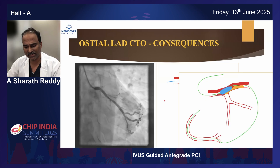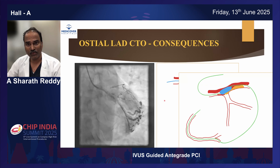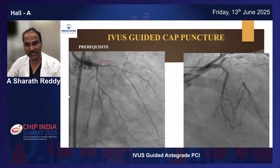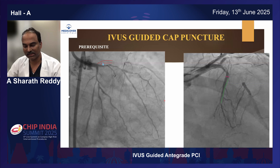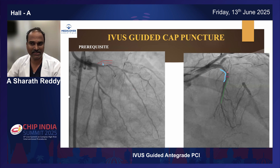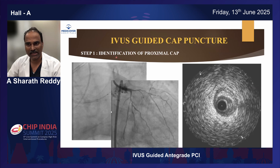The dangers with this are: if you go antegrade without knowing how you are going, you can occlude your side branch with a dissection flap. If you go retrograde also, you can do the same thing. The best strategy is to do an IUS-guided cap puncture followed by the rest of the wiring strategy. The prerequisite is you need a good side branch with a length at least equivalent to the tip-to-transducer distance of IUS, and the angulation should be less than 70 degrees.